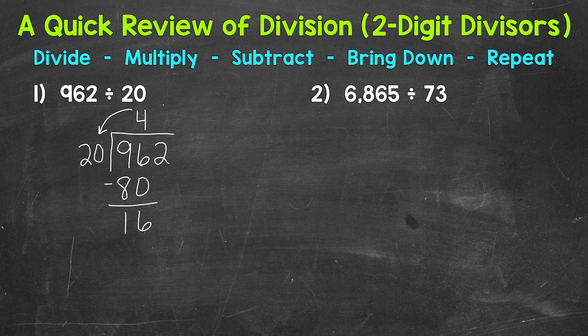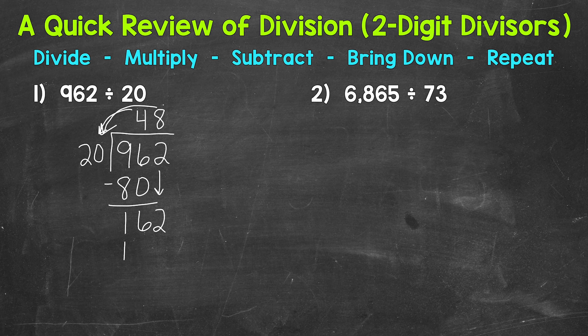After we subtract, we bring down. So let's bring down this 2. And then we repeat. So we go back to divide. So now we have 162 divided by 20. How many whole groups of 20 are in 162? Well, 8 groups of 20 gets us to 160, and that's as close as we are going to get. So 162 divided by 20. 8 whole groups of 20 in 162. Then we come around and multiply. So 8 times 20 is 160. Subtract. 2 minus 0 is 2. 6 minus 6 is 0. And 1 minus 1 is 0. So we have 2.